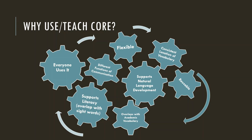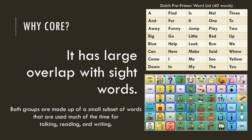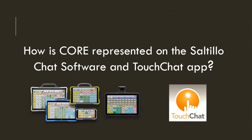Core language allows for expression of a variety of communicative functions. It has consistent location of vocabulary. It overlaps with academic core vocabulary and literacy and is useful across many contexts. It supports literacy and has an overlap with sight words. Essentially everybody uses core language — my core language is the exact same core language as yours. When we look at the Dolch Pre-Primer First 40 Words with the WordPower 60 Basic, we find that 19 out of 40 words — approximately 50 percent — are on the home page. About a third of all written material is comprised of about 25 words.